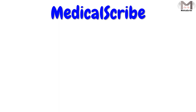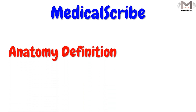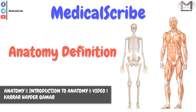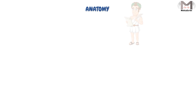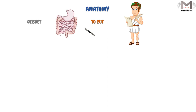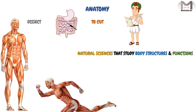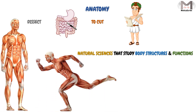Hi guys and welcome back to Medical Scribe. This video is the first in the Introduction to Anatomy series. Today we will talk about the anatomy definition. Anatomy is a Greek word meaning 'to cut' or 'to dissect something.' The scientific definition of anatomy is that it is one of the natural sciences that studies the body structures and functions — meaning what the body is composed of and what the functions of these structures are.